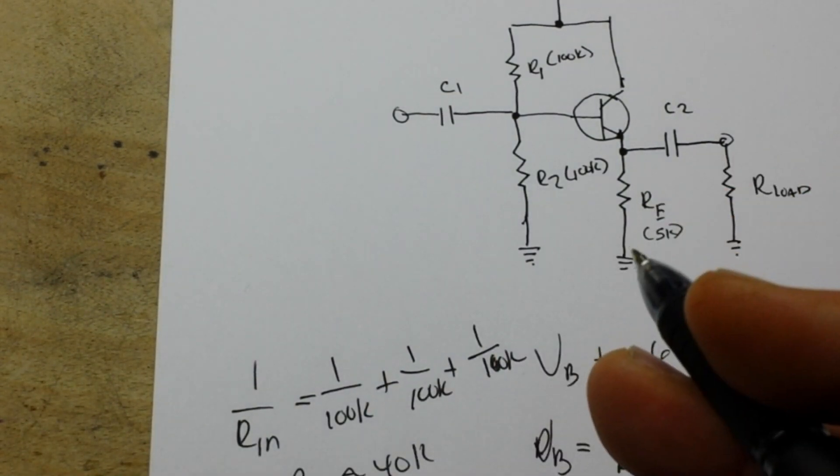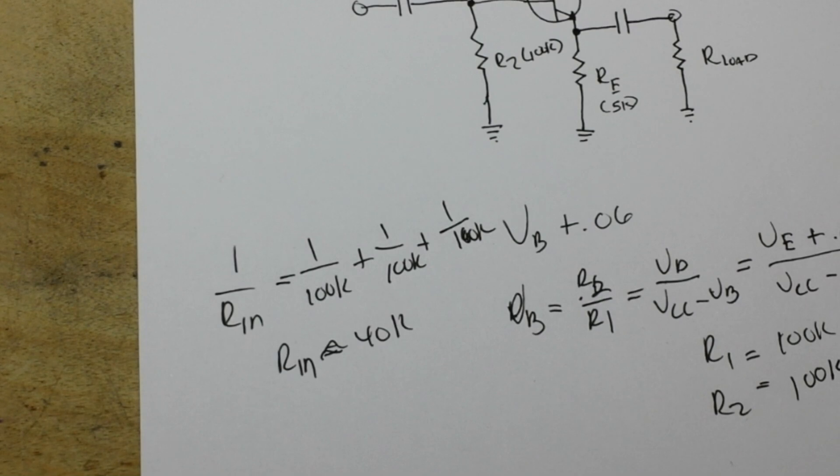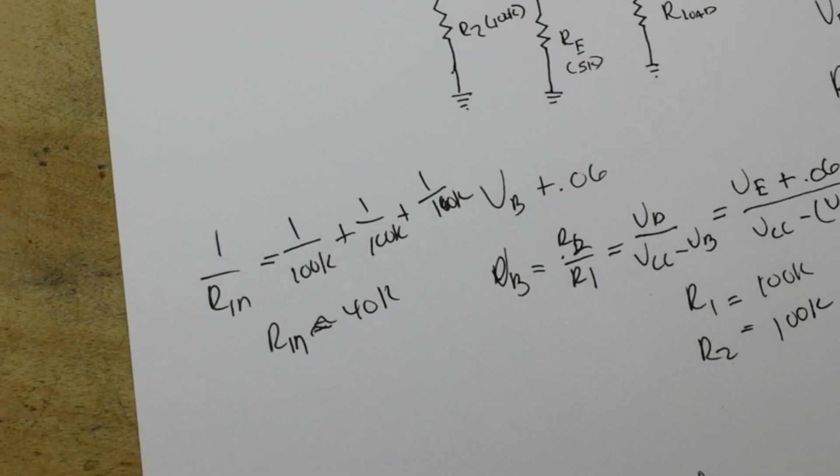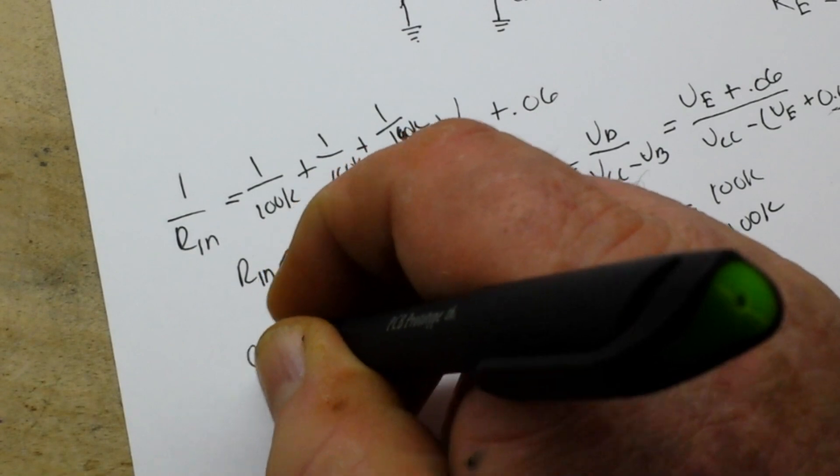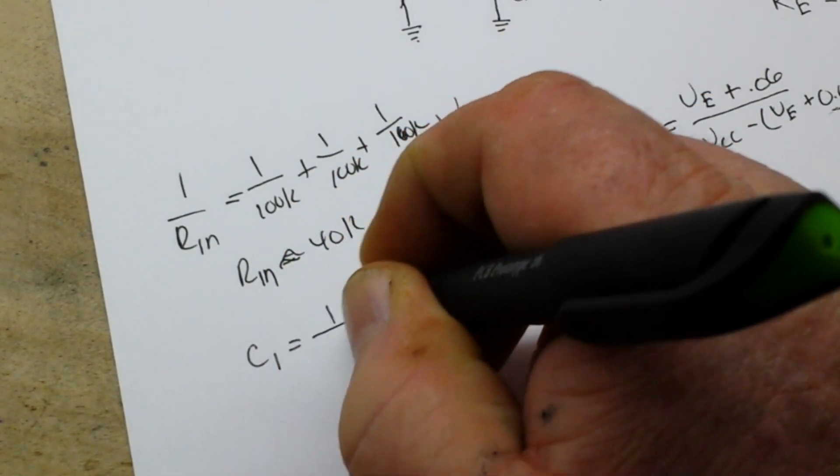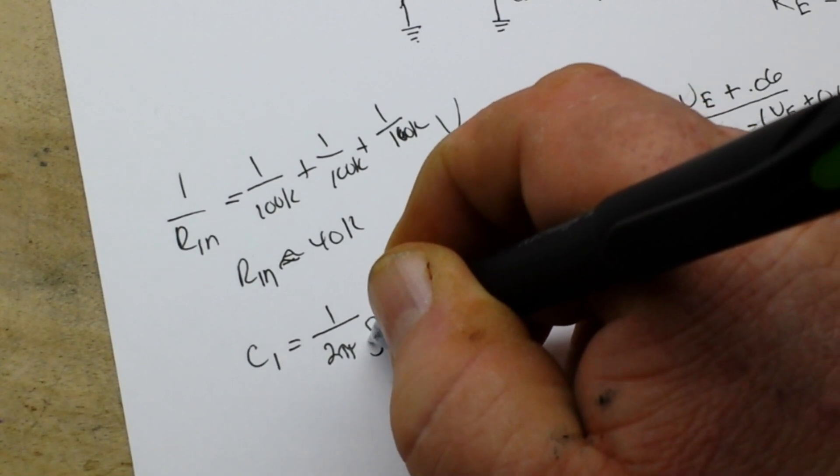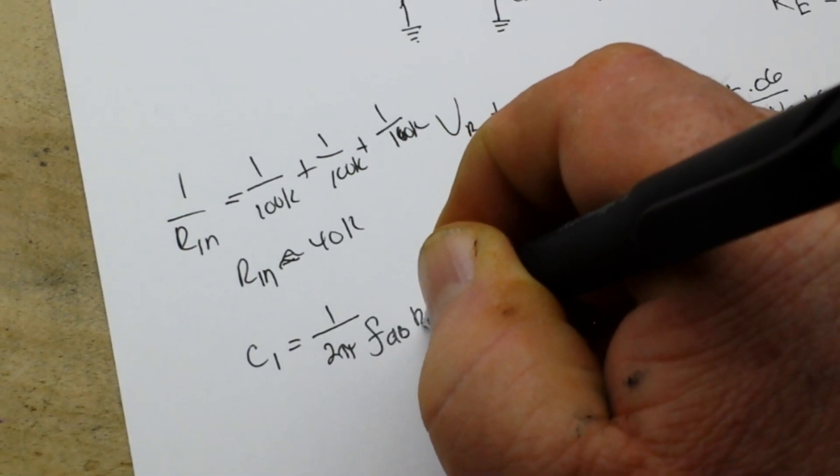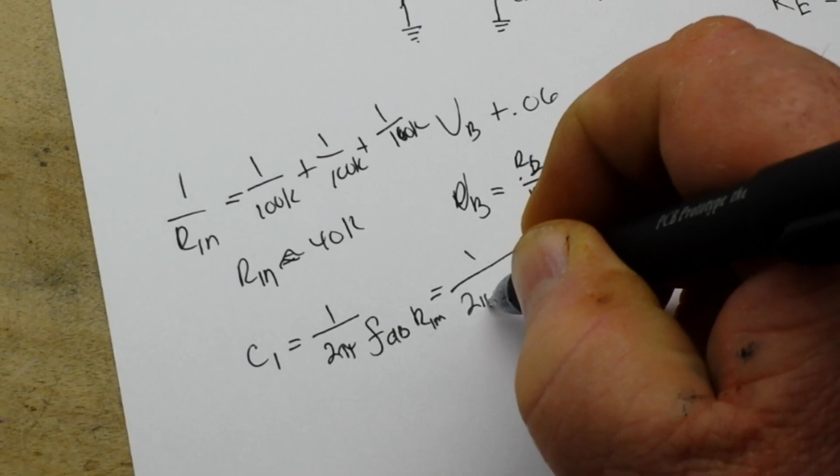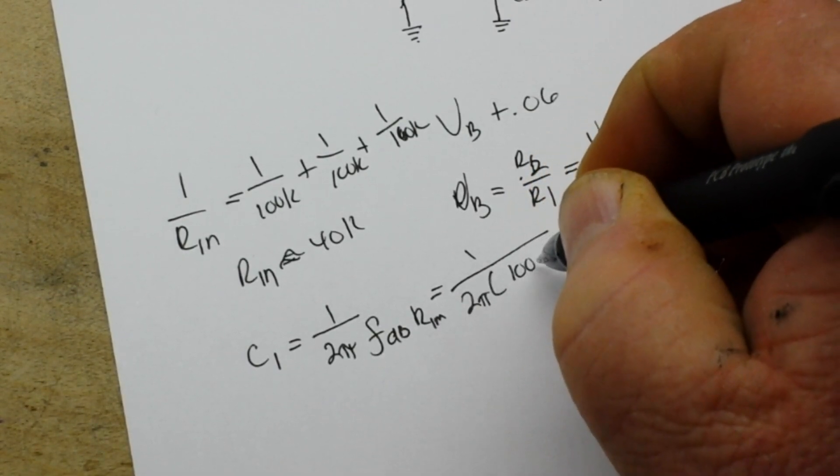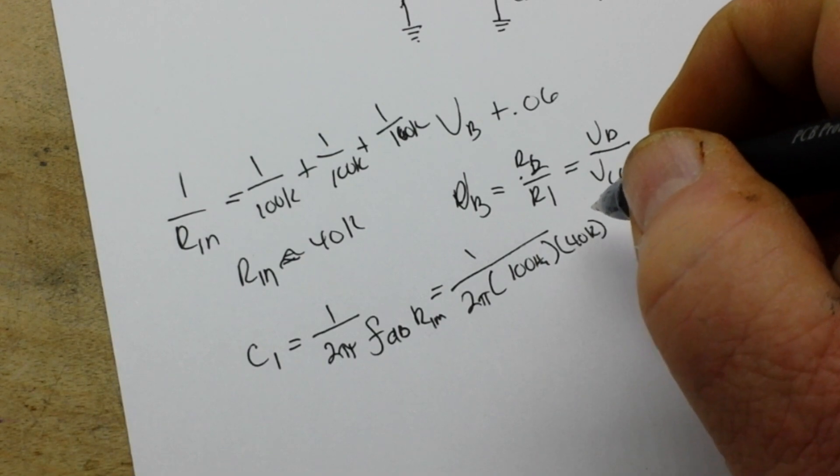Now that we've found our Rn, we can set our C1 at the frequency minus 3 dB point. We just have to have a capacitor value and we can find that using another formula. So C1 at Rn would be equal to 1 over 2 pi frequency 3dB Rn, or 1 over 2 pi, 100 hertz, times our 40k. That's where it makes our high pass.